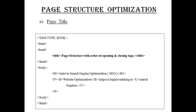Each title tag should be unique, descriptive about what the page is, optimized with a keyword, and under 60 characters in length. Here is a sample program explaining the page title. Starting with the DOCTYPE declaration, HTML tag, head tag, and the title tag — whatever text is highlighted here will be put in the page title on the topmost bar. The title given here is 'Page Structure with Order of Opening and Closing Text'. Then title close, head close, body close, and the content is displayed.